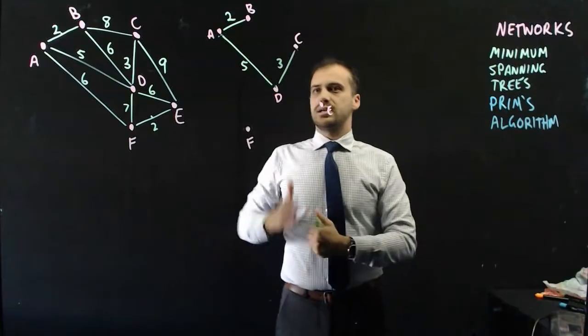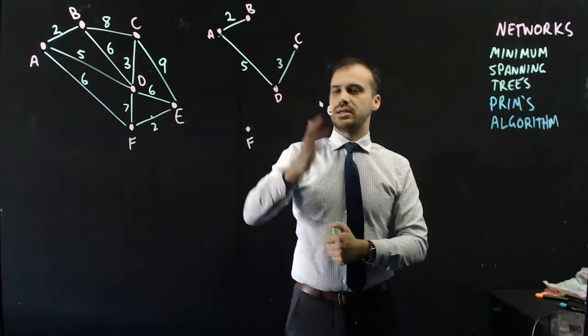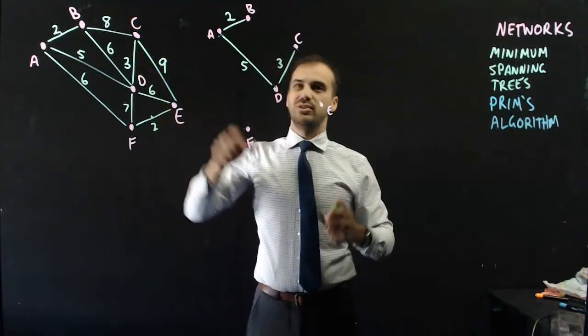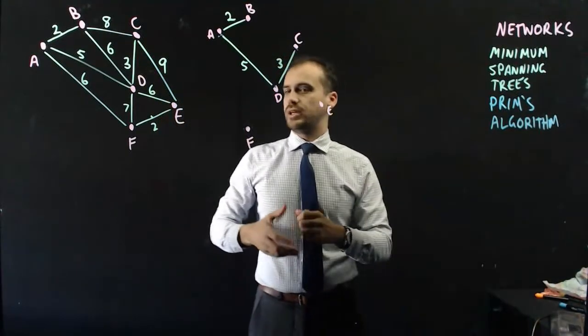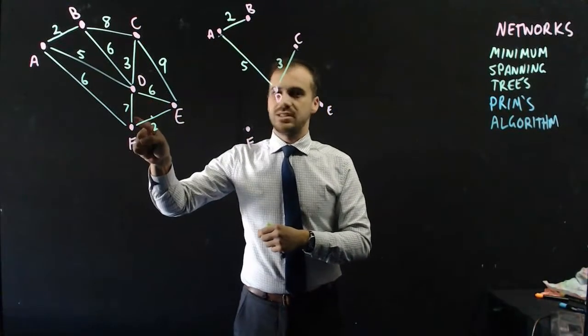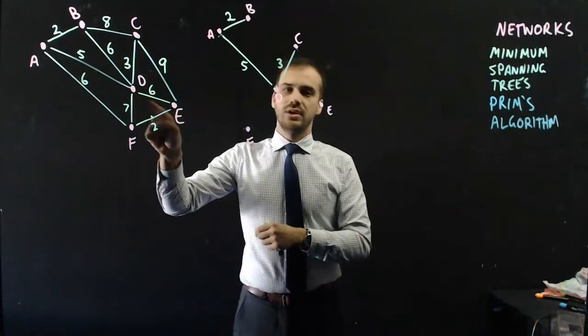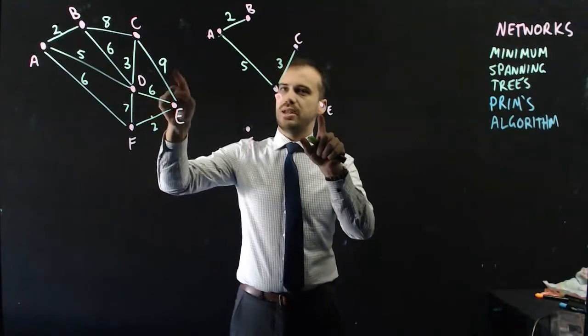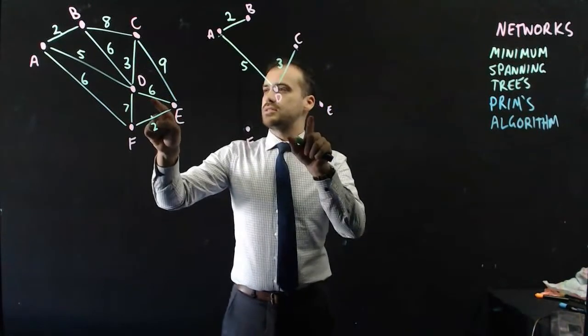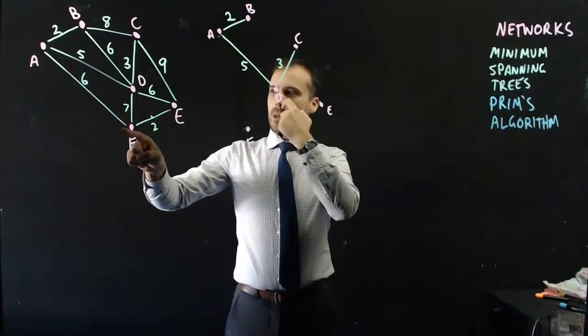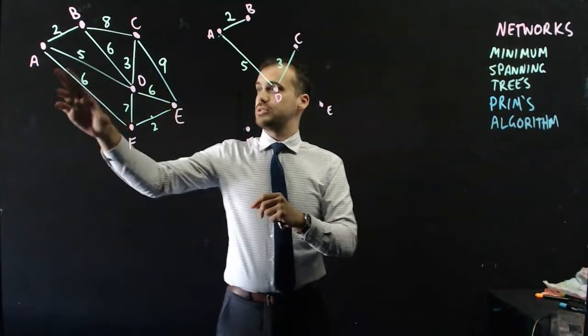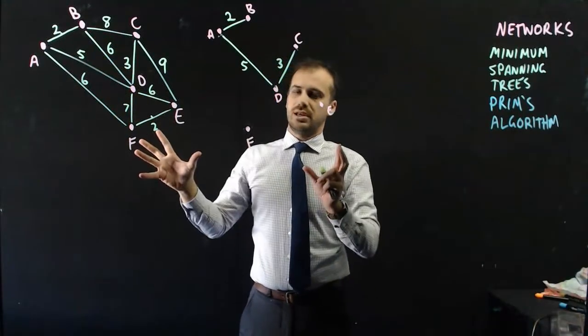Now we need to consider C joining itself to E or F. C can join itself to E with 9. Yuck. D can join itself to E or F with 6 or 7. Clearly joining itself to E with 6 would be best. So, that's better than the 9. A could join itself to F using 6 as well. So, that's pretty good. That's just as good as that. And B can't join directly to E and F.